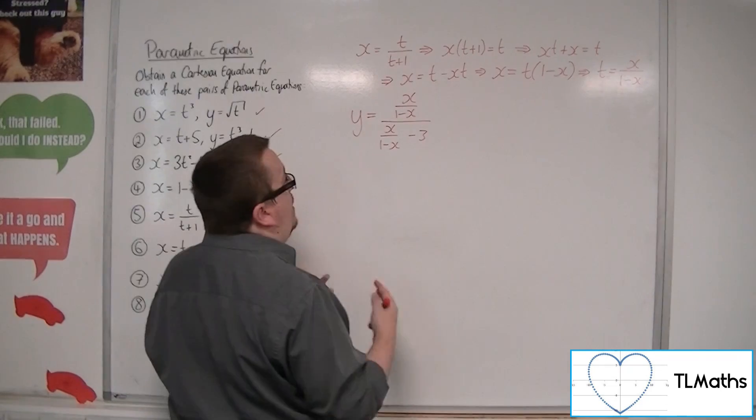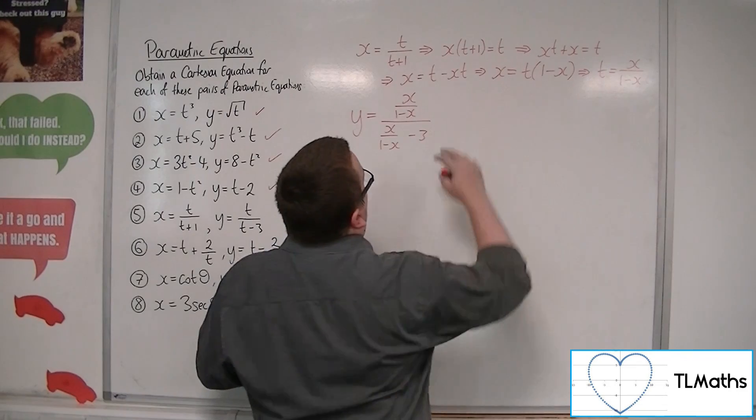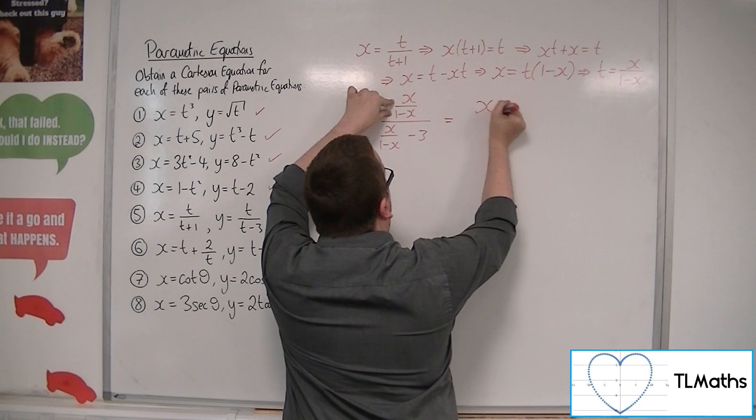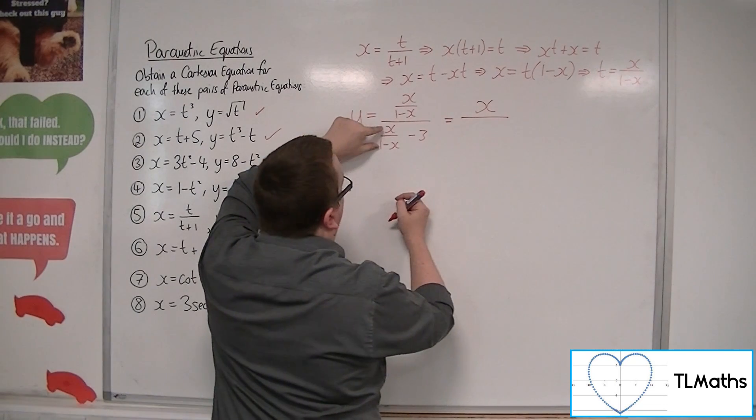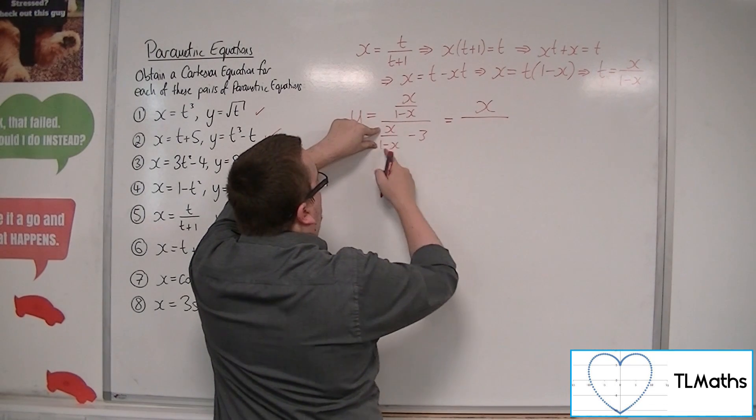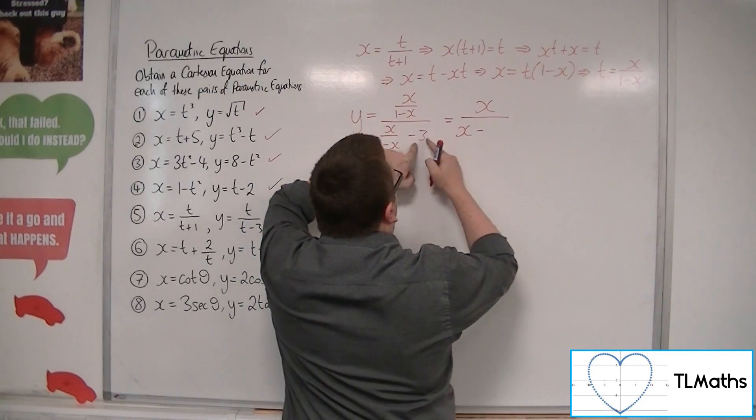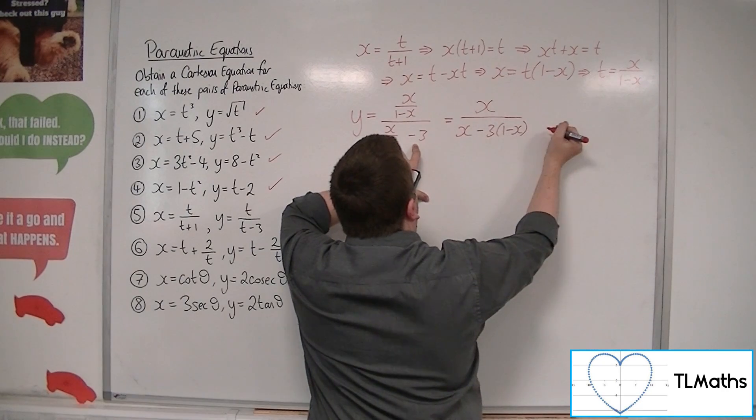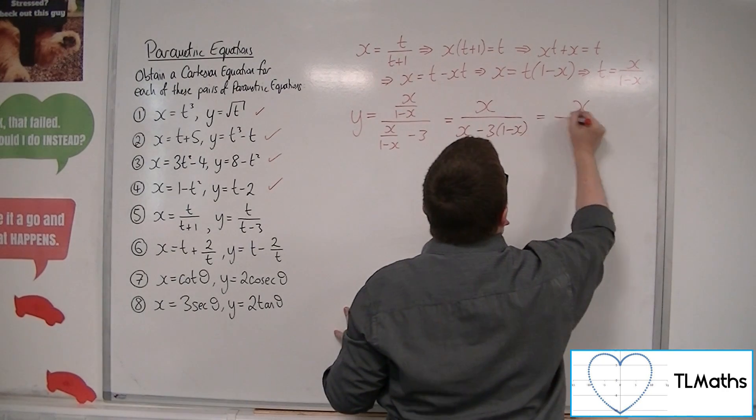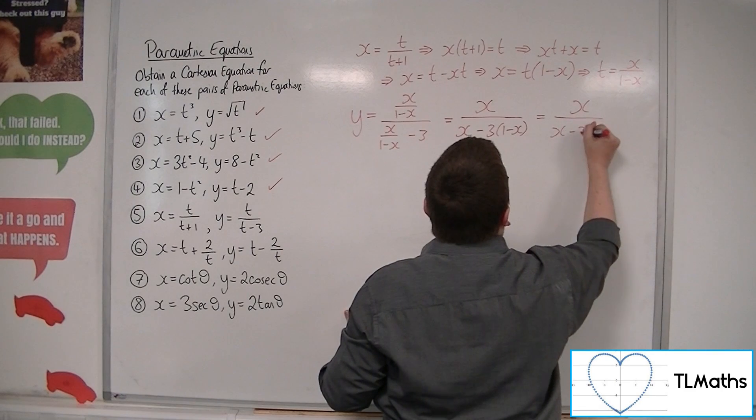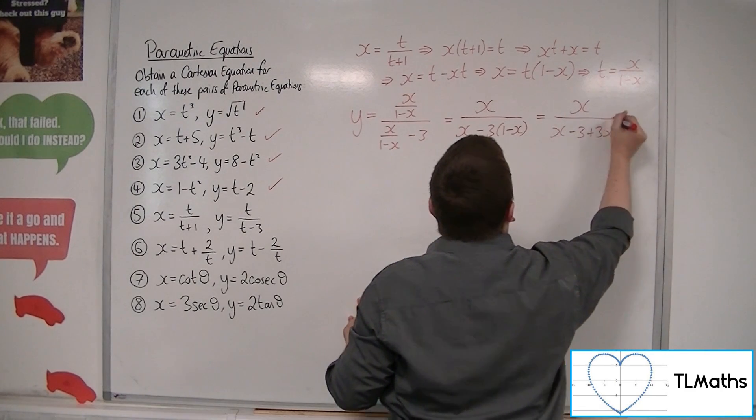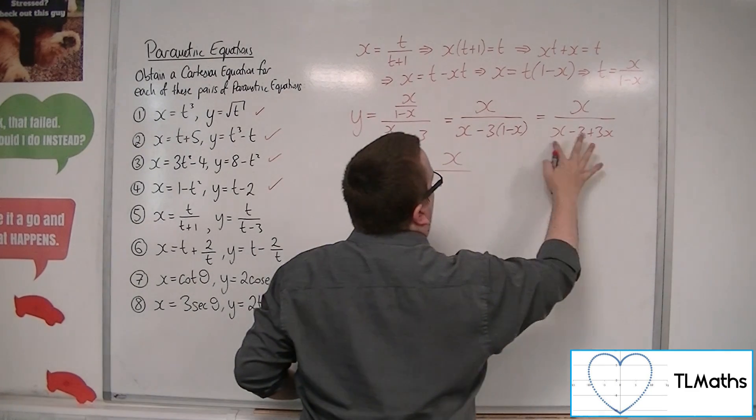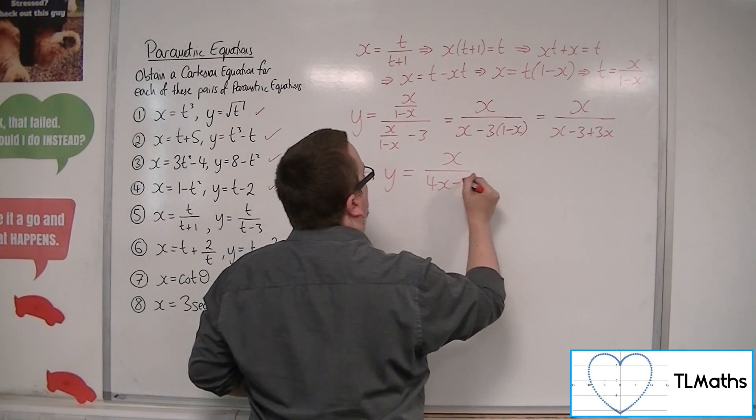So if I multiply top and bottom of this fraction by 1 minus x, I'm not changing the size of the fraction at all. But what I will do is I will get rid of the denominators. So if I times the top, the numerator, by 1 minus x, I just get x. If I multiply the denominator by 1 minus x, I just get x there. Then take away 3 lots of 1 minus x.